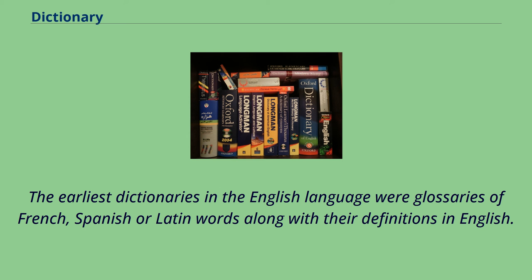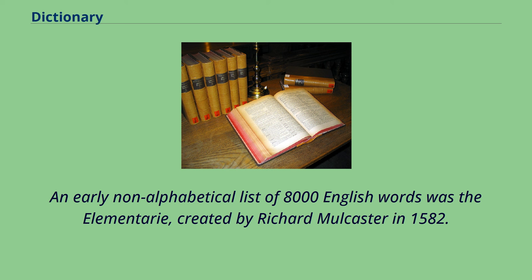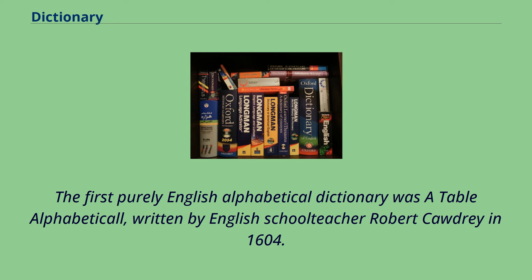The earliest dictionaries in the English language were glossaries of French, Spanish, or Latin words along with their definitions in English. The word dictionary was invented by an Englishman called John of Garland in 1220; he had written a book Dictionarius to help with Latin diction. An early non-alphabetical list of 8,000 English words was the Elementarie, created by Richard Mulcaster in 1582. The first purely English alphabetical dictionary was A Table Alphabeticall, written by English schoolteacher Robert Cawdrey in 1604.